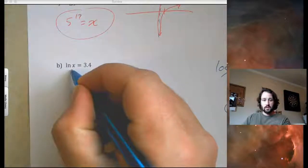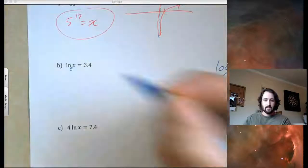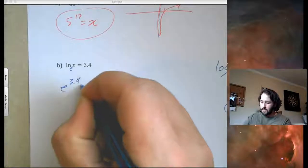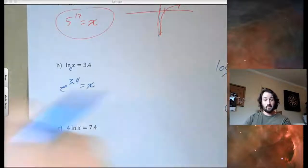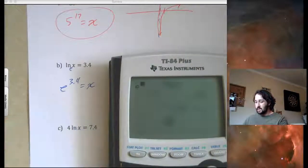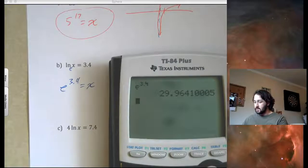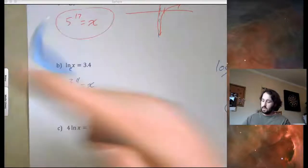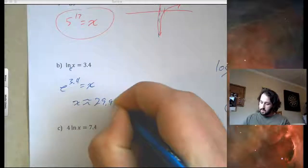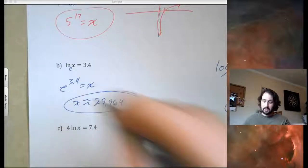So, stuck in log form. Remember, your base is e. So, I'm going to rewrite this in exponential and say e to the 3.4 equals x. Type that in your calculator to get an actual decimal approximation. So, I have e to be 3.4. So, it looks like it's 29.964. So, x is approximately 29.964. That's it.